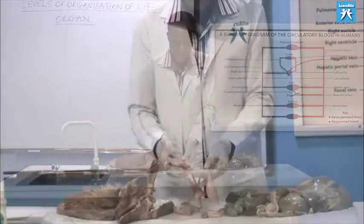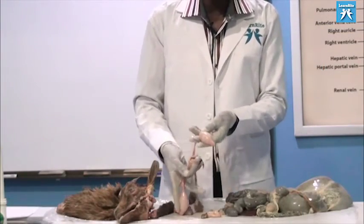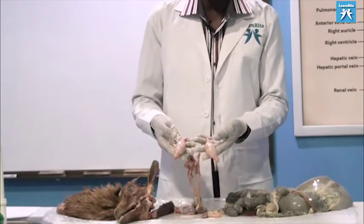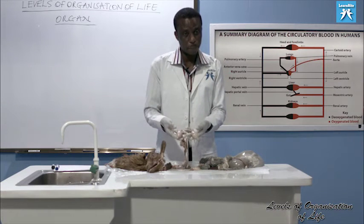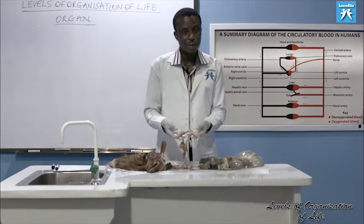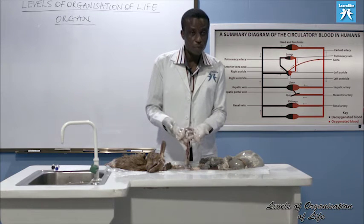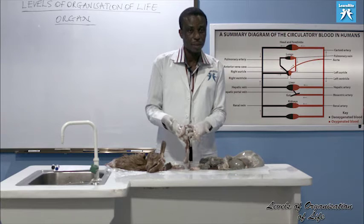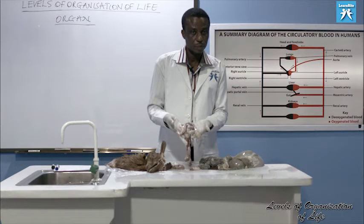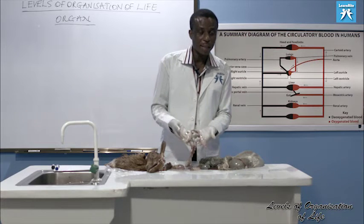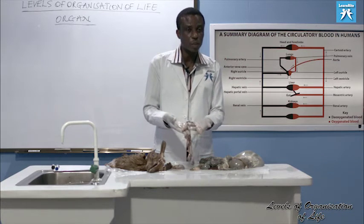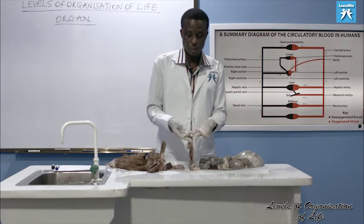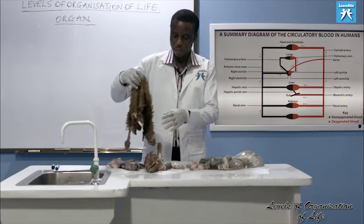Another important organ is for reproduction — the testes. The function of the testes is reproduction; they secrete spermatozoa. The testes also produce the hormone testosterone, which is responsible for secondary sexual characteristics. Don't forget that the largest organ in mammals is the skin.